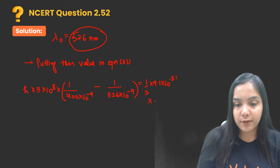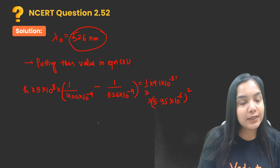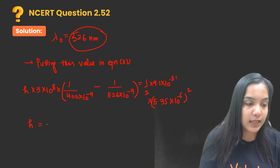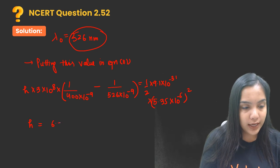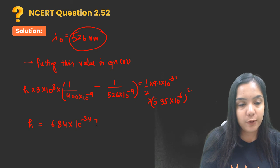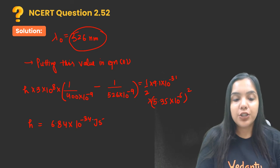After solving this I am getting h value is equal to 6.84 into 10 raised to power minus 34. Units have to be mentioned: joules per second. So this is the value we are getting.